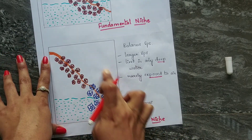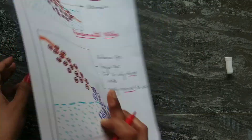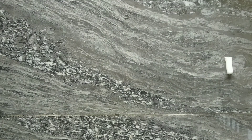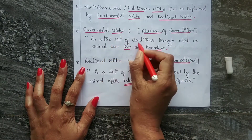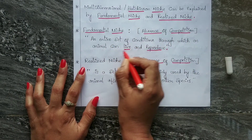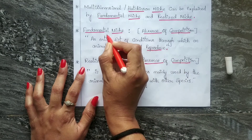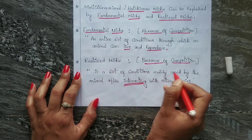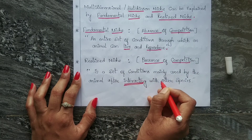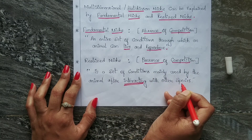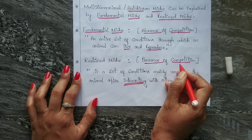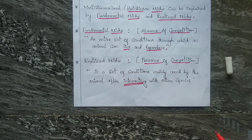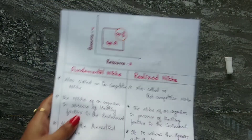Going back to the definitions: the entire set of conditions under which an animal can live and reproduce represents the fundamental niche. The set of conditions mainly used by the animal after interacting with other species — in the presence of competition — represents the realized niche.